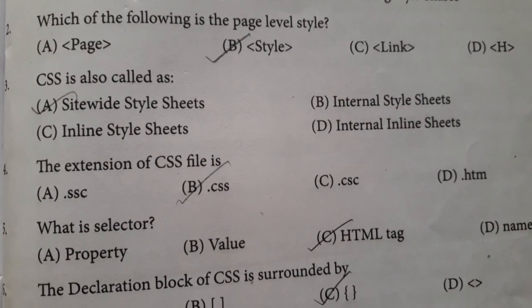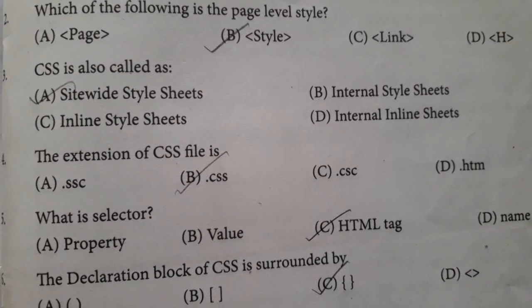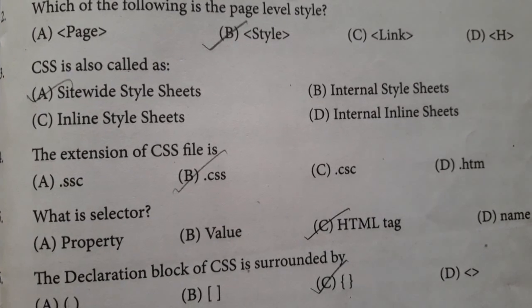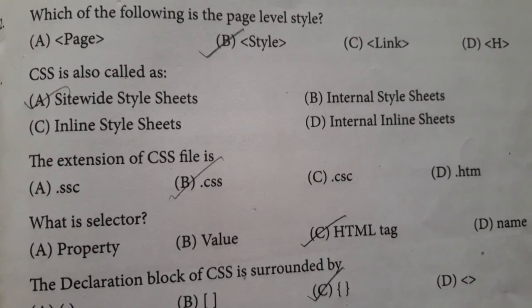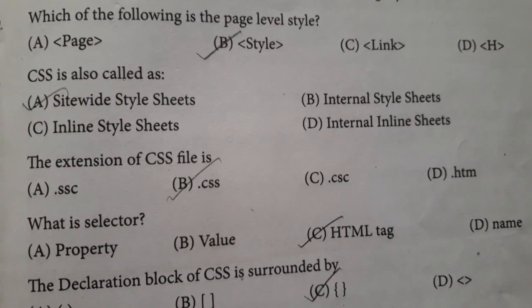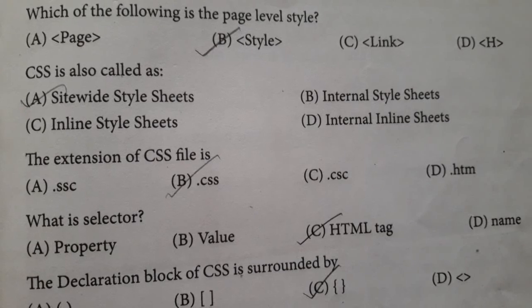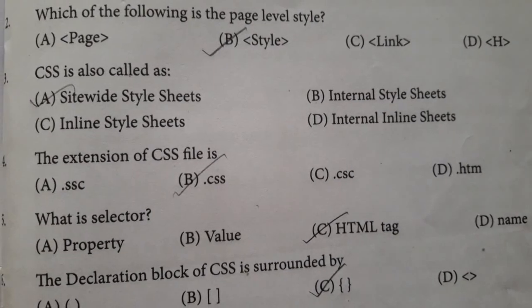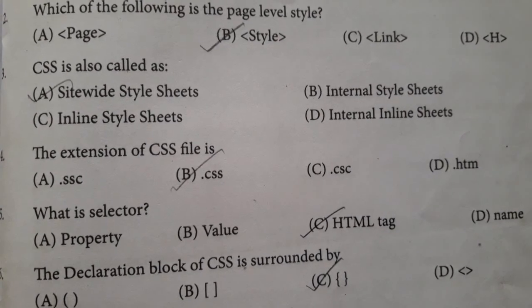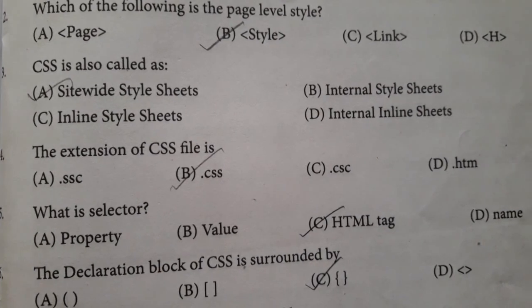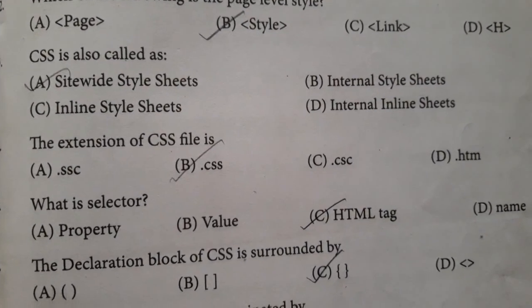Question number three: CSS is also called as. Option A: site-wide style sheets. Option B: internal style sheets. Option C: inline style sheets. Option D: internal inline sheets. Answer is option A: site-wide style sheets.